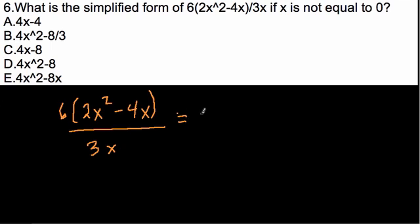So, when we distribute the 6 on top, we get 12x squared minus 24x, just multiplying 6 by each part.